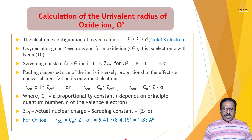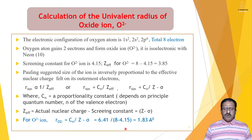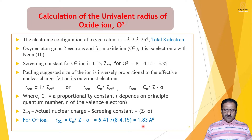Z effective equals actual nuclear charge minus the screening constant, that is Z minus sigma. The actual nuclear charge of the oxide ion or oxygen is 8, and the screening constant is 4.15. So for this ion, 8 minus 4.15 is equal to 3.85.